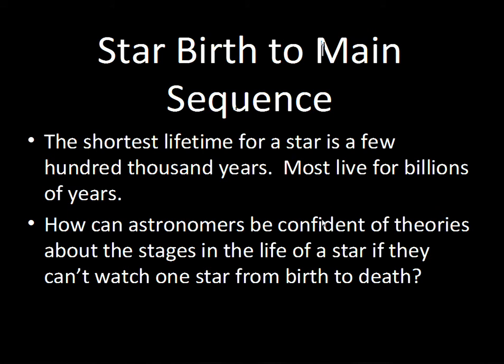This introduction deals with star birth up to the main sequence. Astronomers can run computer models that calculate how long it takes a star to go through its fuel. For very massive stars, it's a few hundred thousand years — still a long time compared to a human lifetime. At the low-mass end, stars have enough fuel for billions of years, because low-mass stars do not use fuel at a high rate. High-mass stars have high temperatures in the core, which greatly affects the rate of fusion.